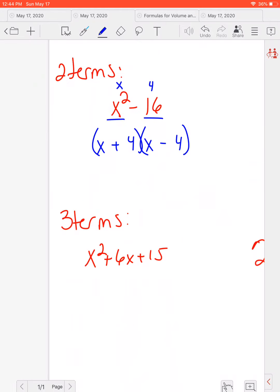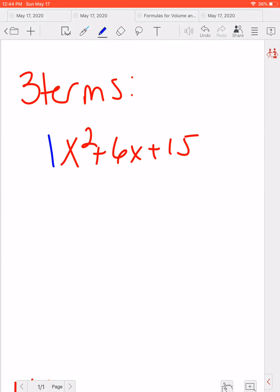Okay, if we have three terms, there's two different ways we talked about doing this. When there's a leading coefficient of 1 here, we can just pop our two parentheses here and we know that we need an X times an X.